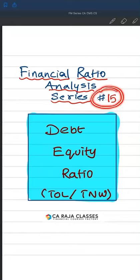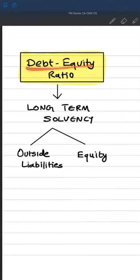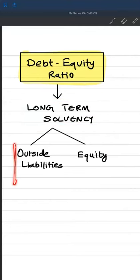Financial ratio analysis series video number 15. Let's understand what is debt-equity ratio, also known as TOL by TNW. This ratio is calculated to understand the long-term solvency of the business. Here we will be comparing the outside liabilities with equity.